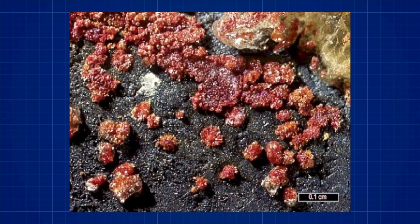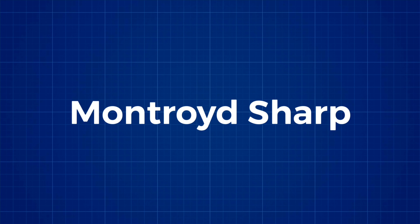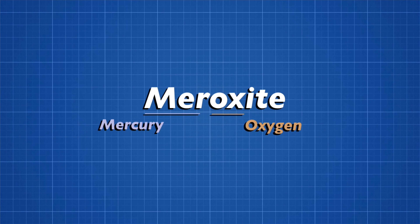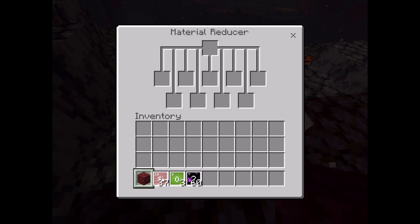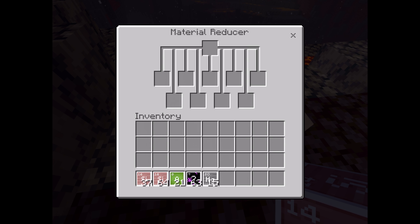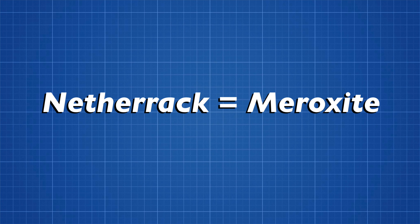I think that netherrack is montrodite, but montrodite definitely needs a new name. The word montrodite comes from a man named Montrode Sharp. I'd like to rename it moroxite, because it's a lot more catchy. So netherrack is moroxite — reddish-tinted and found deep below the earth. The materials from the material reducer match up almost perfectly, so you can tell your friends that netherrack is moroxite.